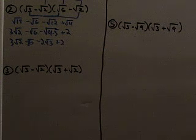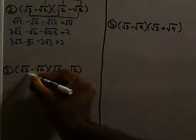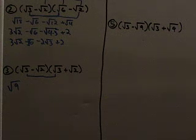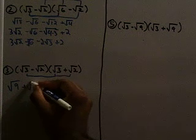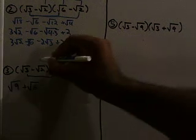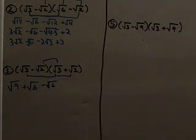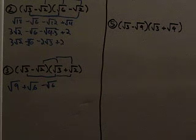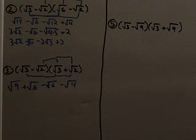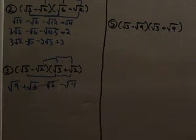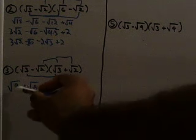I need to FOIL again. Square root of 3 times the square root of 3 is square root of 9. Square root of 3 times positive square root of 2 is square root of 6. Negative square root of 2 times the square root of 3 is minus the square root of 6. And negative square root of 2 times the square root of 2 is negative square root of 4. Those middle terms are going to cancel because plus square root of 6 minus square root of 6 cancels. So all we really have is the square root of 9 minus the square root of 4.